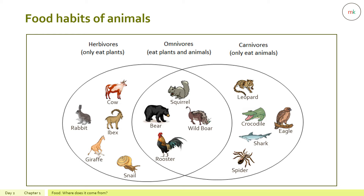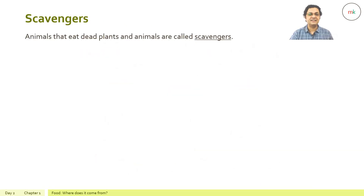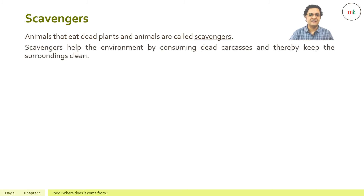Where would you place human beings? Humans are omnivores. The different types of teeth allow us to eat both plants and animals. Animals that eat dead plants and animals are called scavengers.